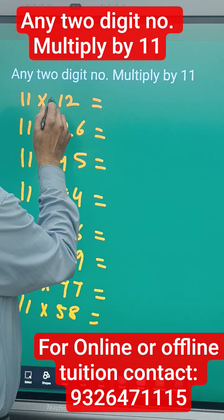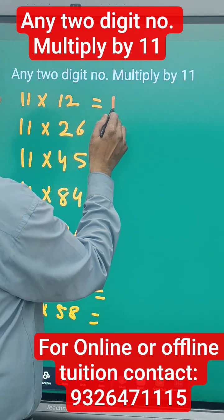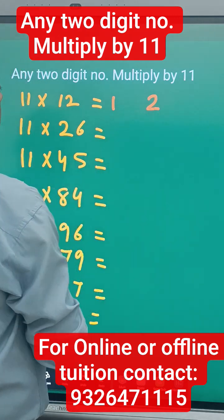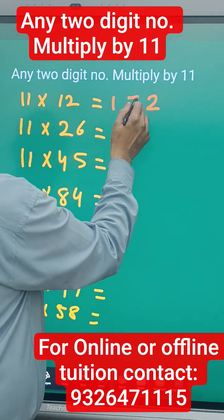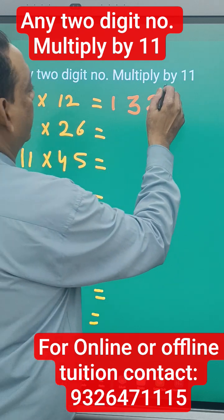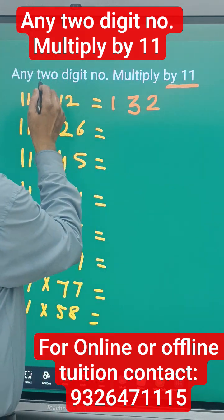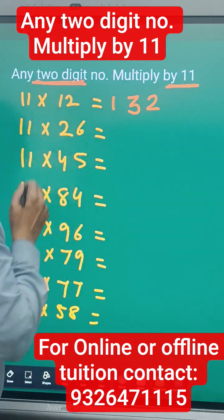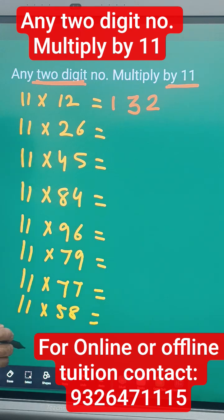What we'll do here: we write 1 and 2, and what is 1 plus 2? 3. This we have to do. This is called the special multiplication when one number is 11. 11 multiply by any two digit number - this rule is for two digit numbers.